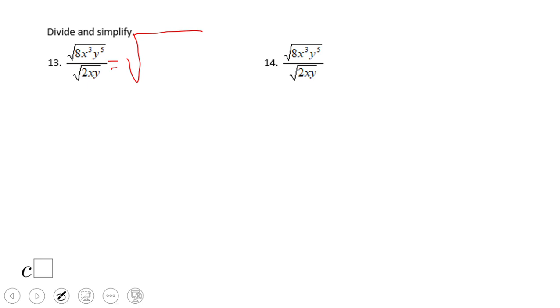So 2 goes into 8 four times, so we have square root of 4. One x cancels one x, so we have x squared. One y cancels one y, so we have y to the fourth power. Square root of 4 is 2.